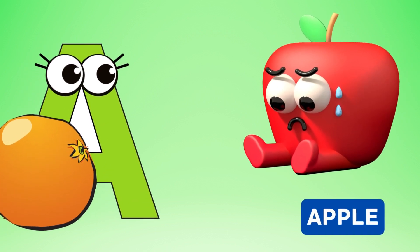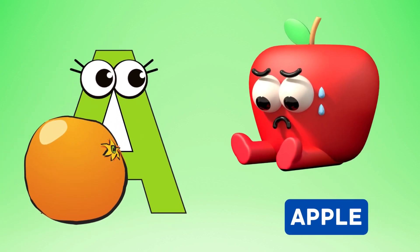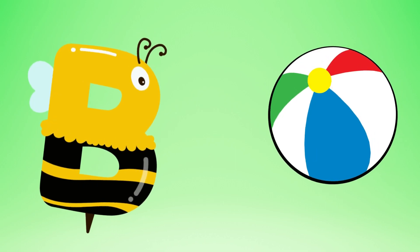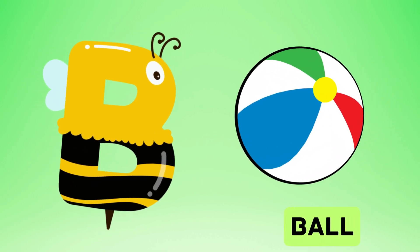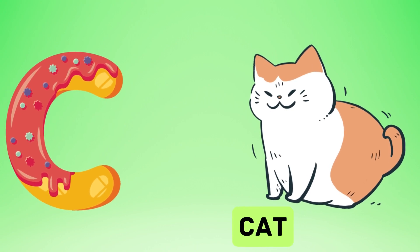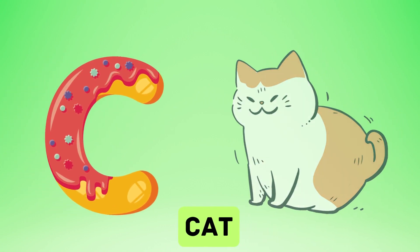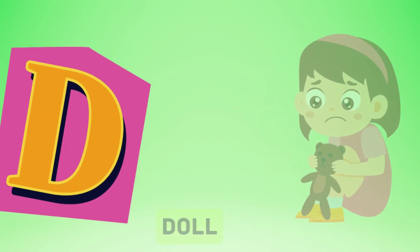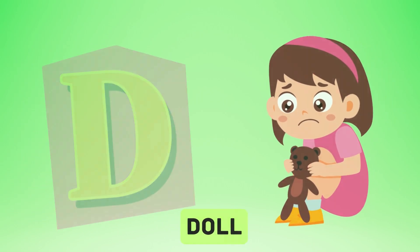A is for apple, a-a-apple. B is for ball, b-b-ball. C is for cat, c-c-cat. D is for doll, d-d-doll.